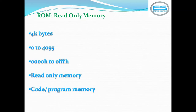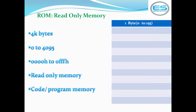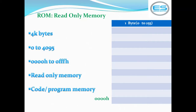The next block is ROM (Read Only Memory), which is used to store data permanently. For the 8051, ROM memory is 4 kilobytes, with addresses from 0 to 4095 in decimal, or 000H to 0FFFH in hexadecimal. This is a read-only memory and does not allow write operations through instructions. Another name for this memory is code memory or program memory. Each location stores a maximum of 1 byte.